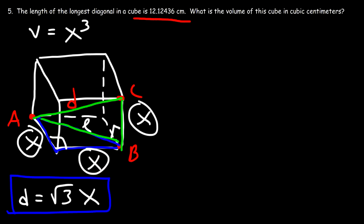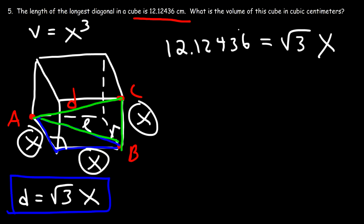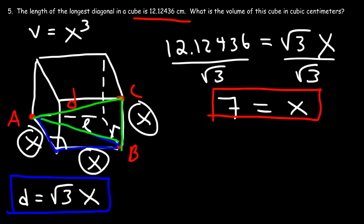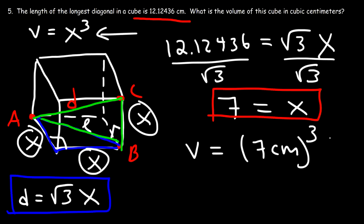The diagonal length is 12.12436 centimeters, so 12.12436 equals the square root of 3 times x. Dividing both sides by the square root of 3 gives x equals approximately 7 centimeters (technically 7.0000251, but essentially 7). The volume is therefore 7 centimeters cubed: 7 times 7 times 7 equals 343 cubic centimeters.